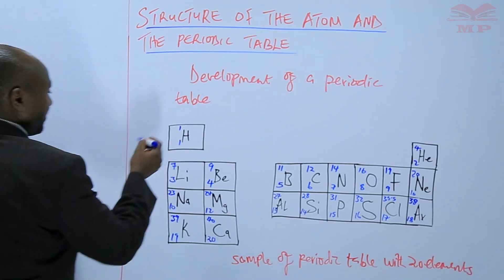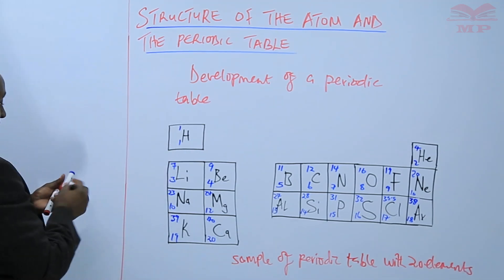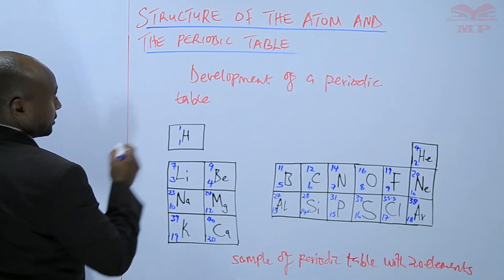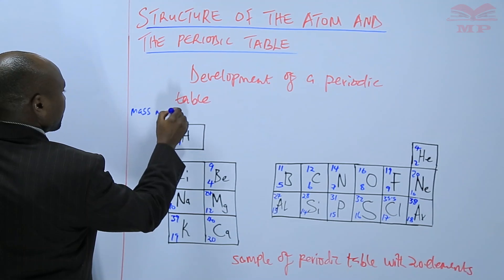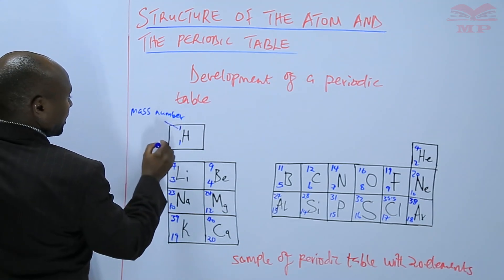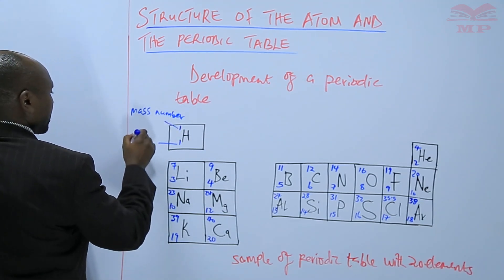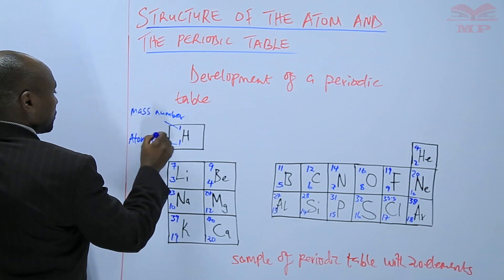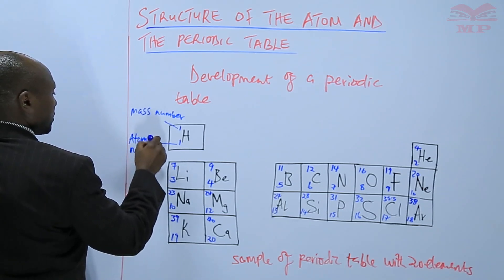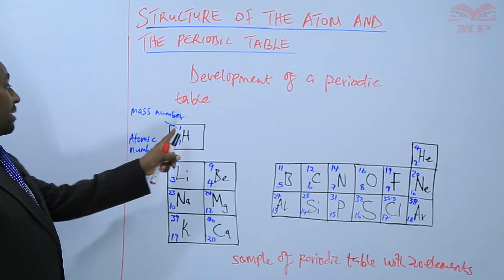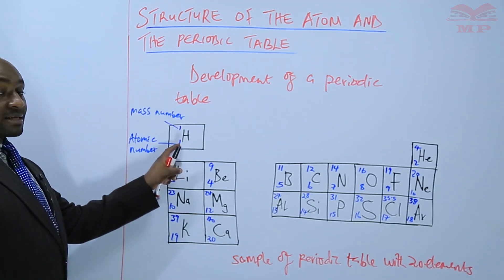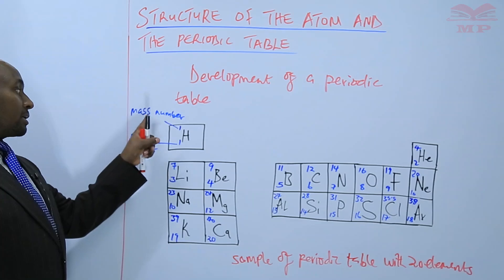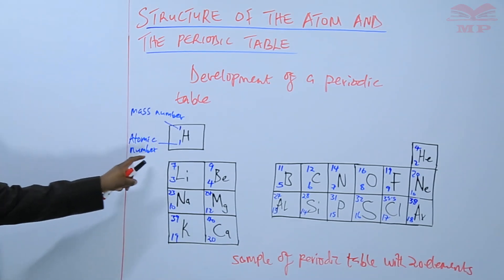The number that is written above is the mass number. The number at the bottom is the atomic number. The number above is the superscript and the number below is the subscript. So the superscript represents the mass number, the subscript represents the atomic number.